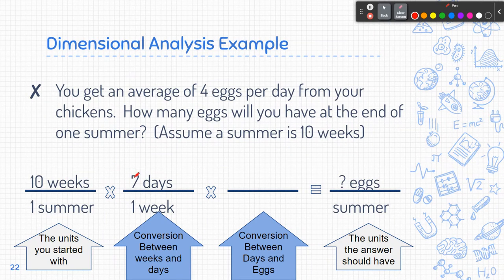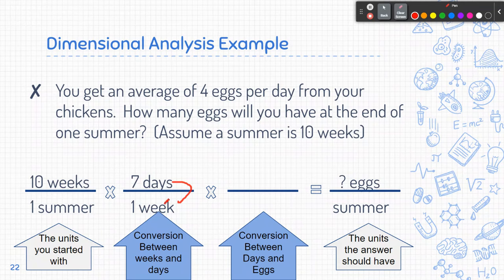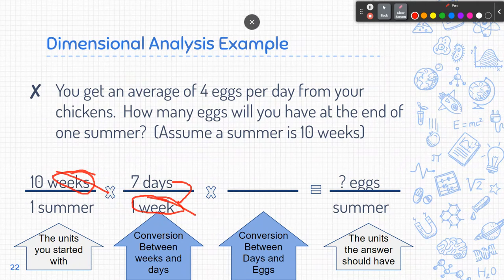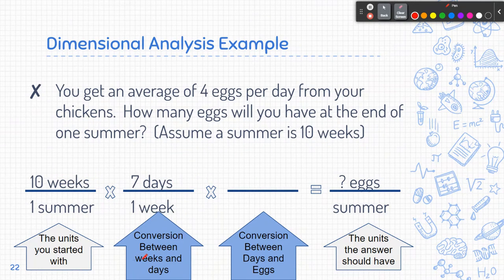If seven days is one week, these two things are the same — seven days is the same thing as one week. It's a little bit weird because the top and bottom look the same, but they're equivalent to each other. Because I have weeks on the top, I need weeks on the bottom, because when I multiply this I'll have one thing on top and one thing on the bottom and those will cancel out. Then I'm going to convert — I have my conversion from weeks to days.